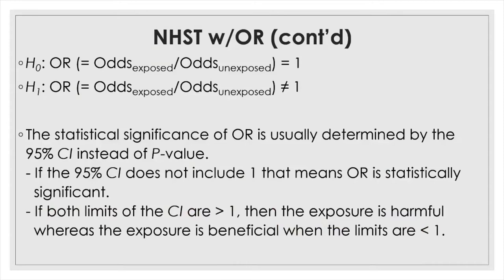To determine the statistical significance of the odds ratio, you either compute the p-value of observing the sample odds ratio, or calculate the 95% confidence interval to see if the interval includes the no-difference point — which for the odds ratio is 1. Typically, the 95% confidence interval is more frequently reported than the p-value.